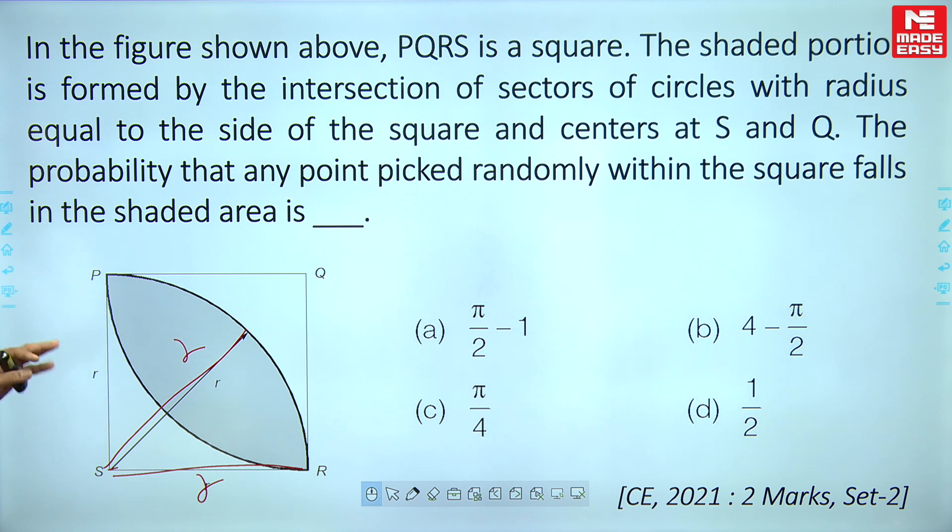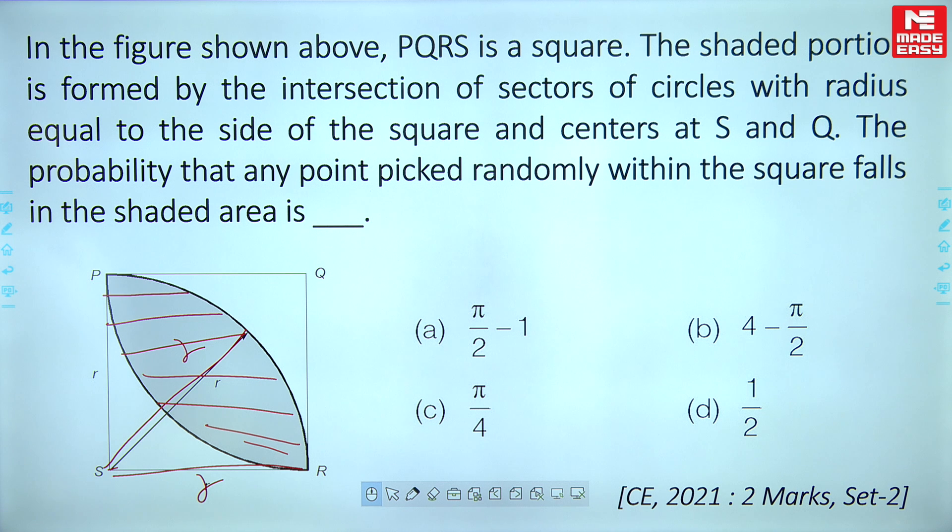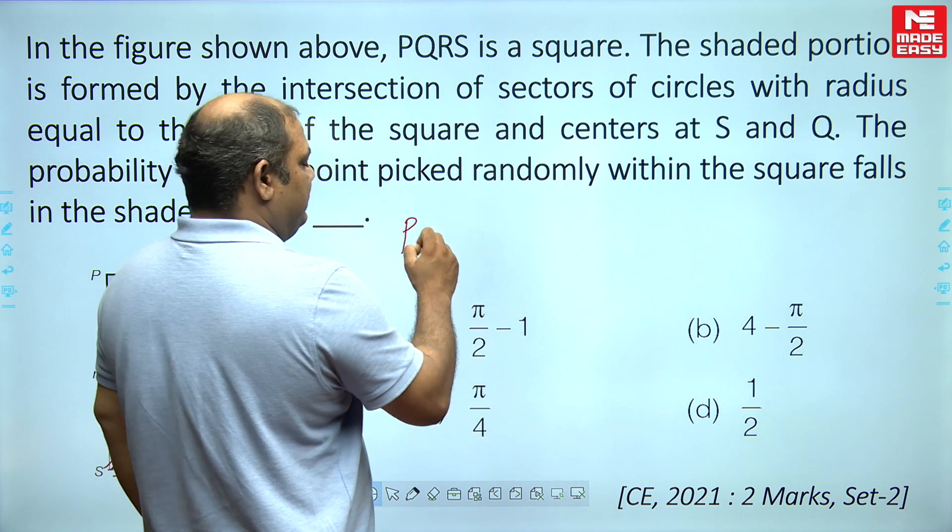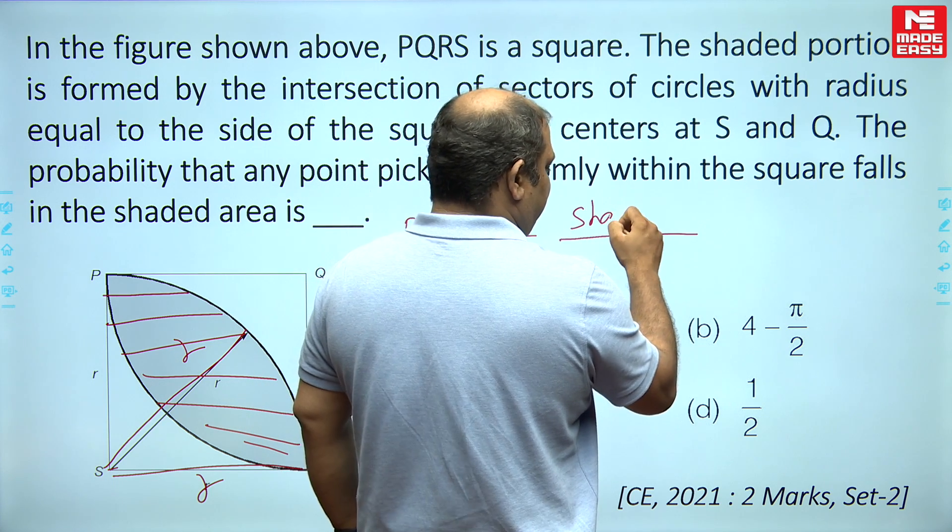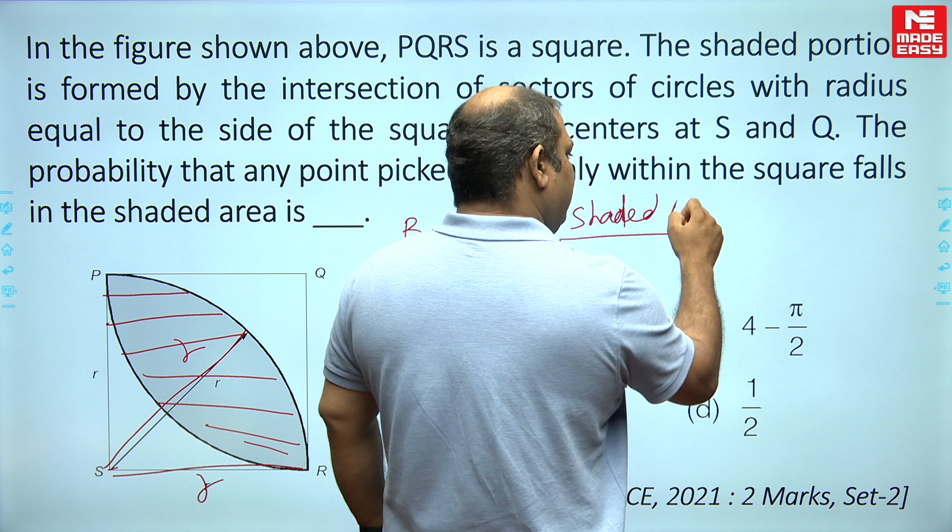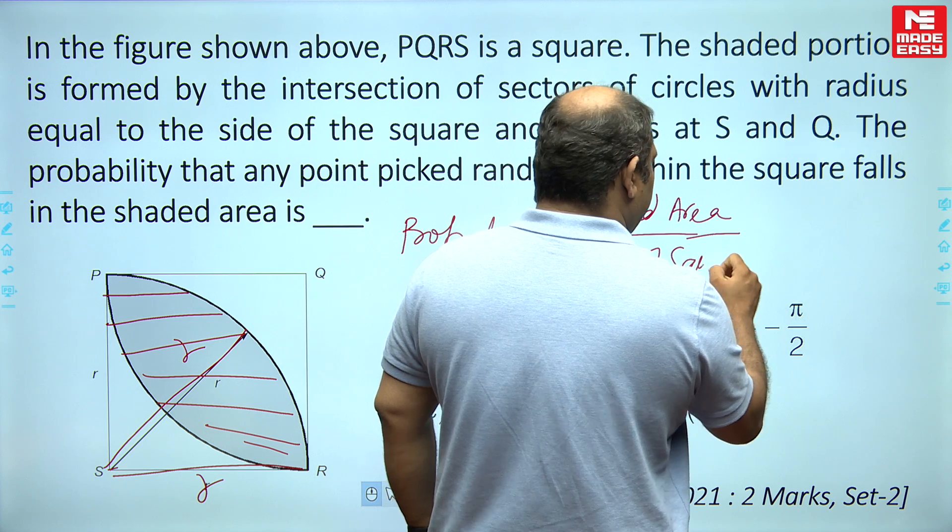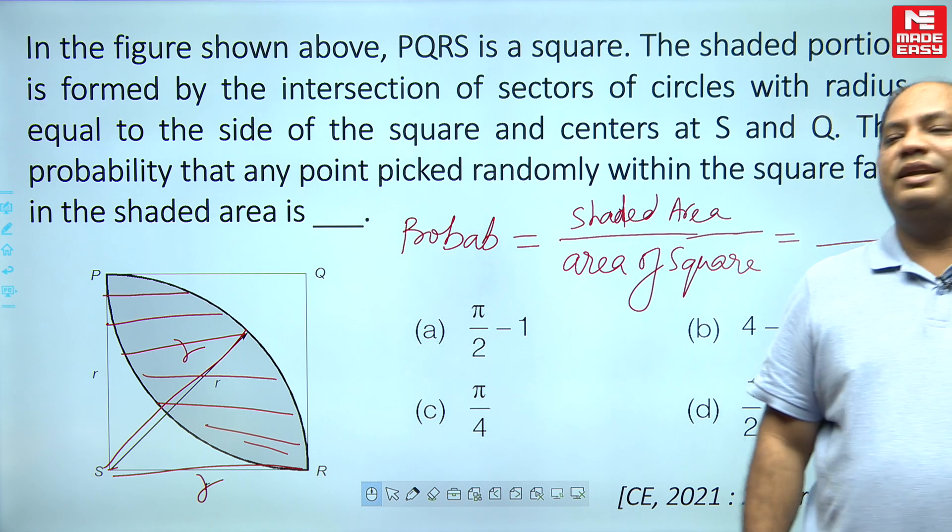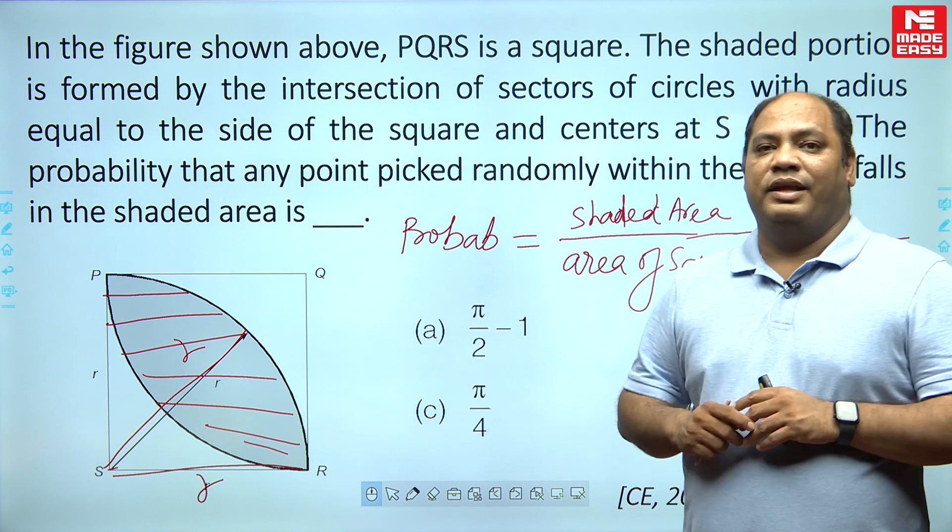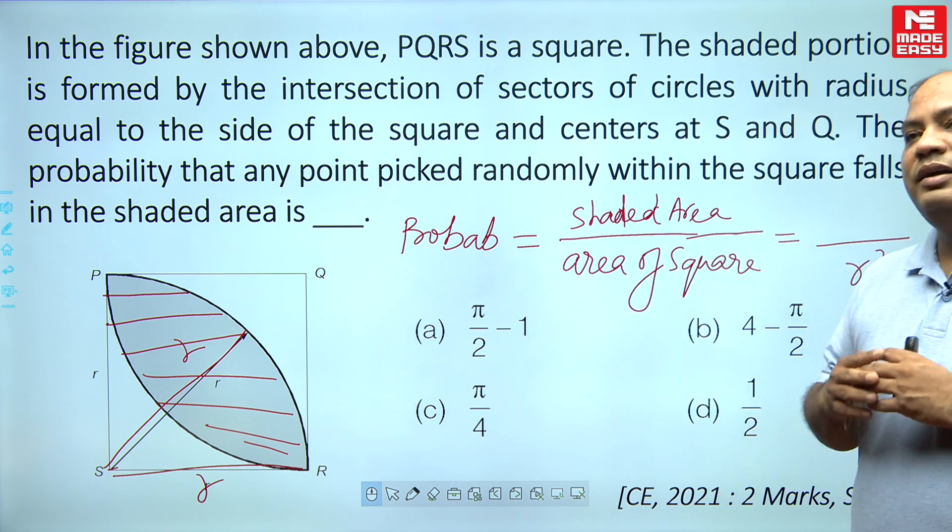So you will find a common shaded area. The question is what is the probability that any point picked randomly in the square falls in the shaded area. So basically the probability you need to find out is the shaded area upon area of square. This is a simple question. Area of square is R square, but what you need now is to find out the shaded area.